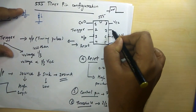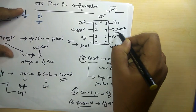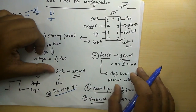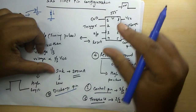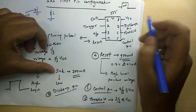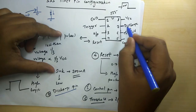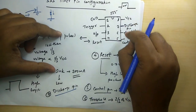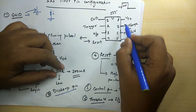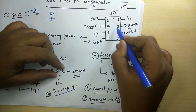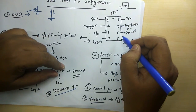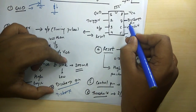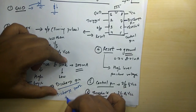Pin 7 is the discharge pin. Outside this pin, a timing capacitor is connected — this capacitor controls the timing of the pulses. The capacitor charges through VCC, but also needs a path to discharge, which is provided through this 7th discharge pin. Internally, an NPN transistor's collector is connected to the discharge pin. So the discharge pin provides a discharge path for the timing capacitor connected externally.